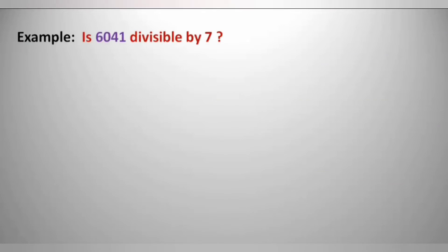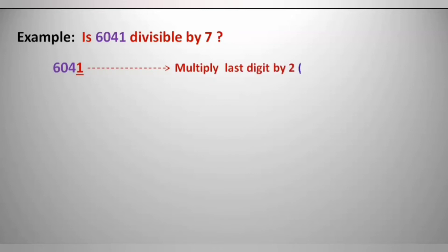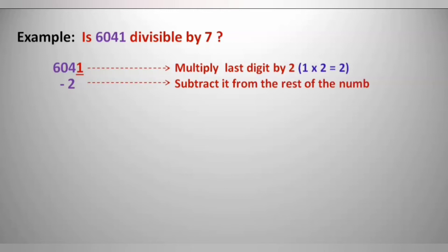Is 6041 divisible by 7? Let us take the last digit, that is 1, and multiply with 2, giving 2. Now subtract this 2 from 604, which gives you 602. But we don't know if 602 is divisible by 7 or not.